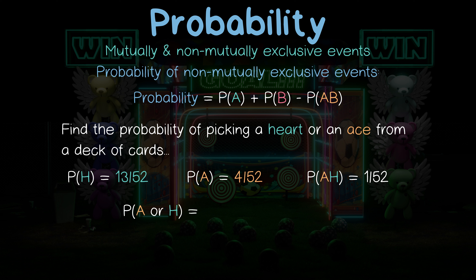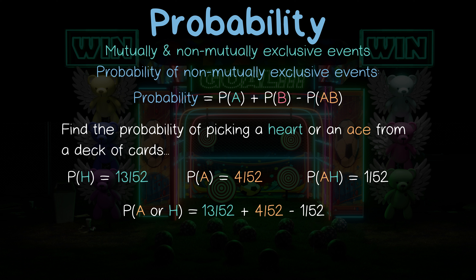In non-mutually exclusive events, there is an overlap between two events, and this overlap means that there is a probability that both events occur at the same time. So when calculating the probability of either event happening — the heart or the ace in this case — we need to account for this overlap, and we do this by subtracting the probability of the overlapping event from our original addition. Essentially, we do exactly what we did for mutually exclusive events: we add our two probabilities together, but then we subtract the probability of the overlap event happening — otherwise we'd be over-counting. This leaves us with 13 over 52 plus 4 over 52 minus 1 over 52, giving us our final probability.